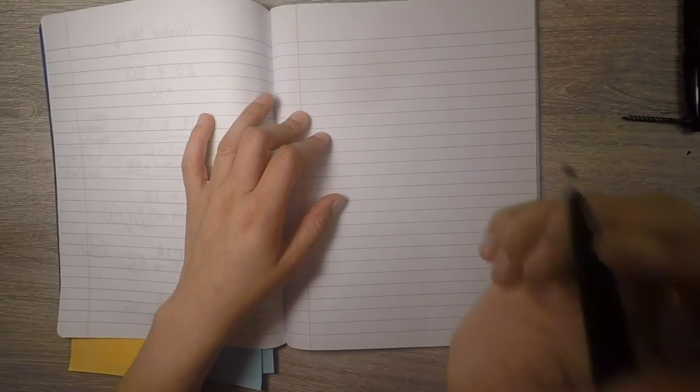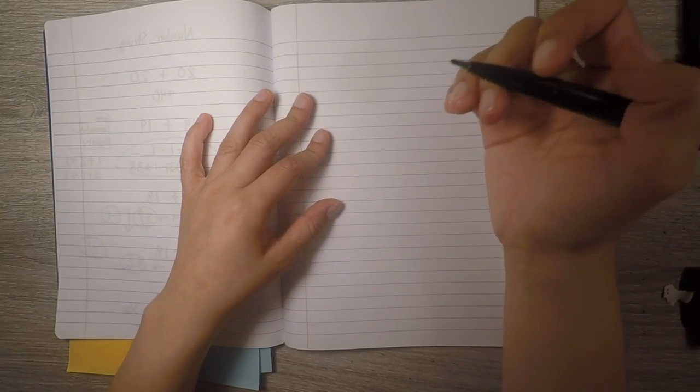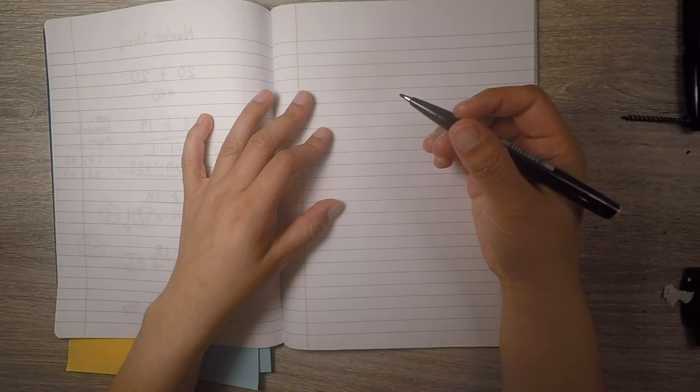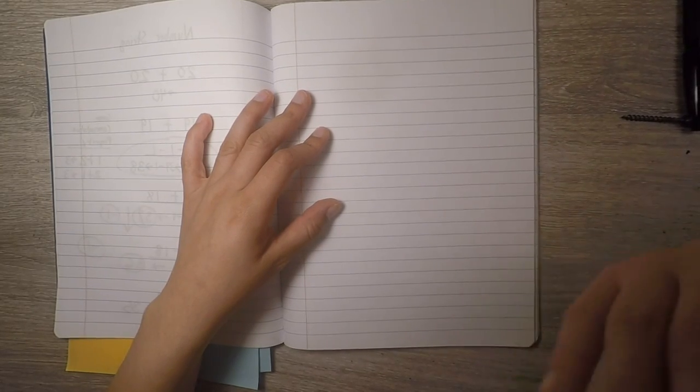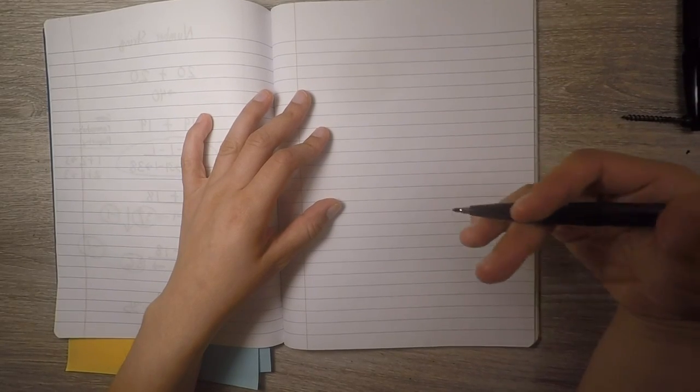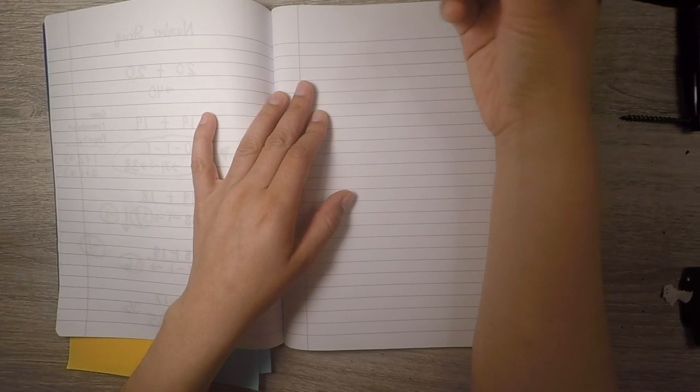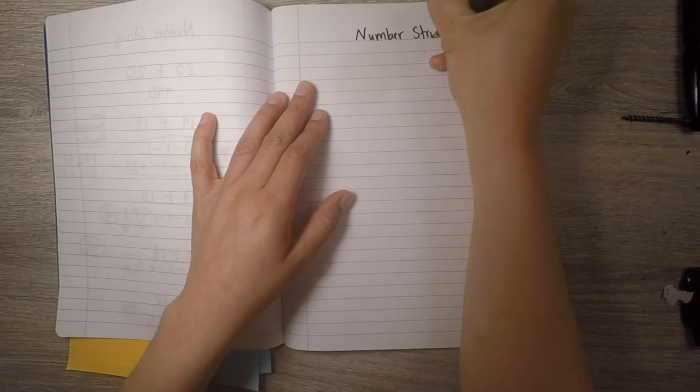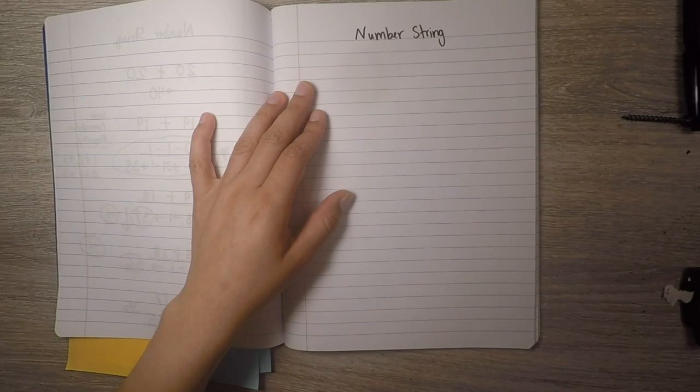Okay mathematicians, welcome back. So we're going to do another number talk, but this time we're going to have a succession of number sentences that are going to help us figure out a new total each time. But if we use our knowledge of the previous number sentences, it's going to make each successive one a lot easier to solve. It's kind of like the number routine we did the other day where it was called a number string. But what's special about the number sentences I'm going to show you today is that each one is going to utilize our knowledge of making tens.